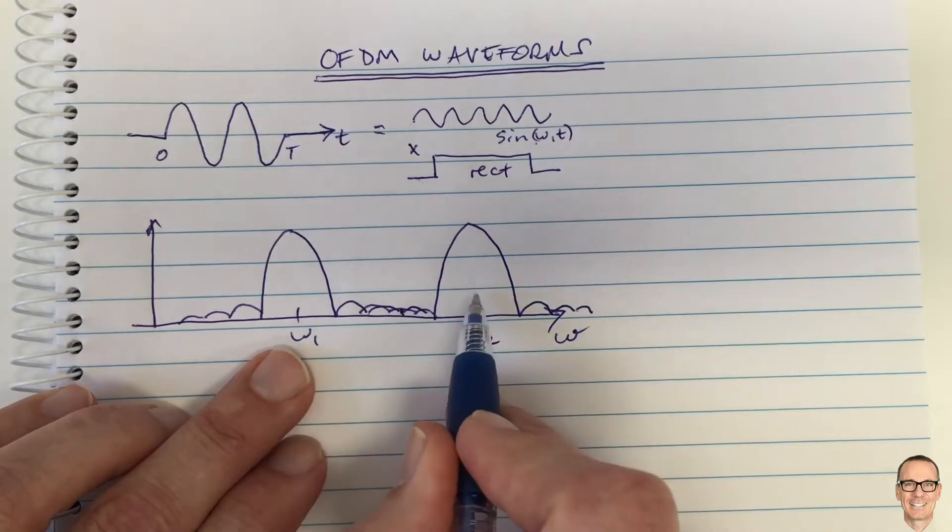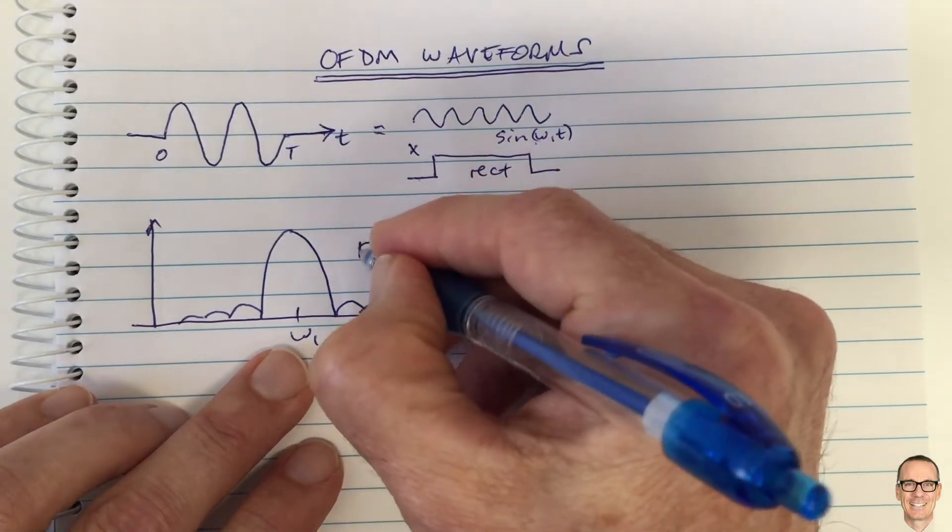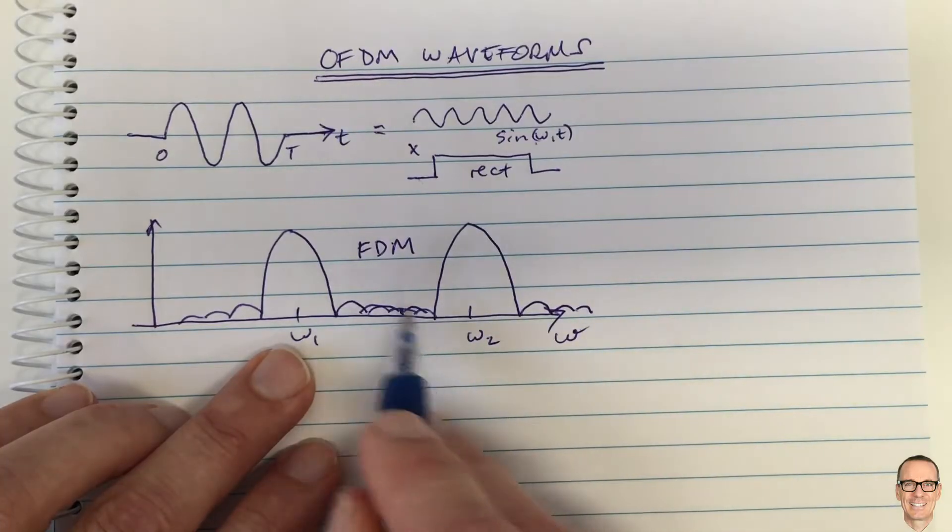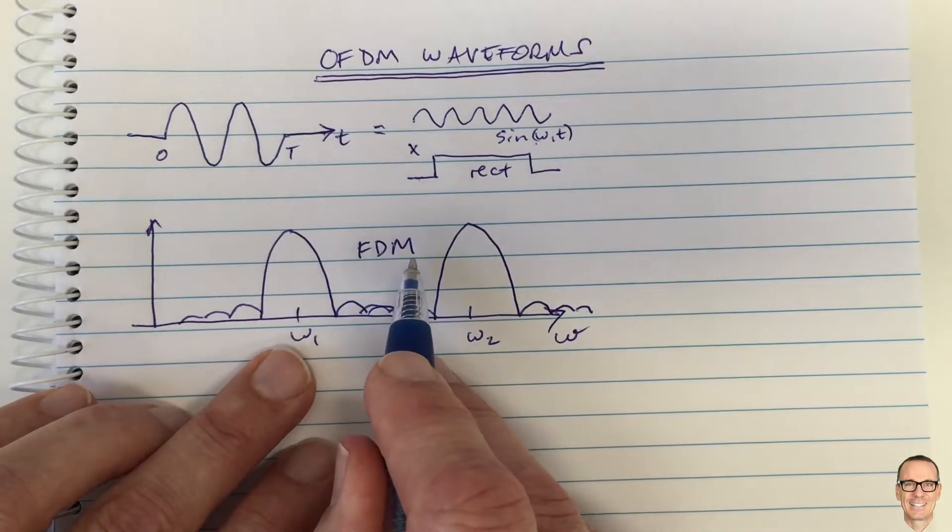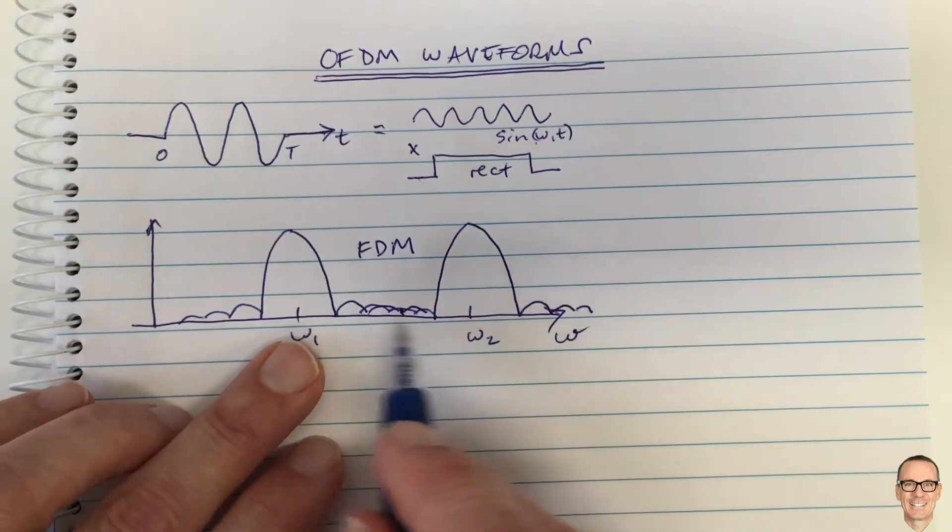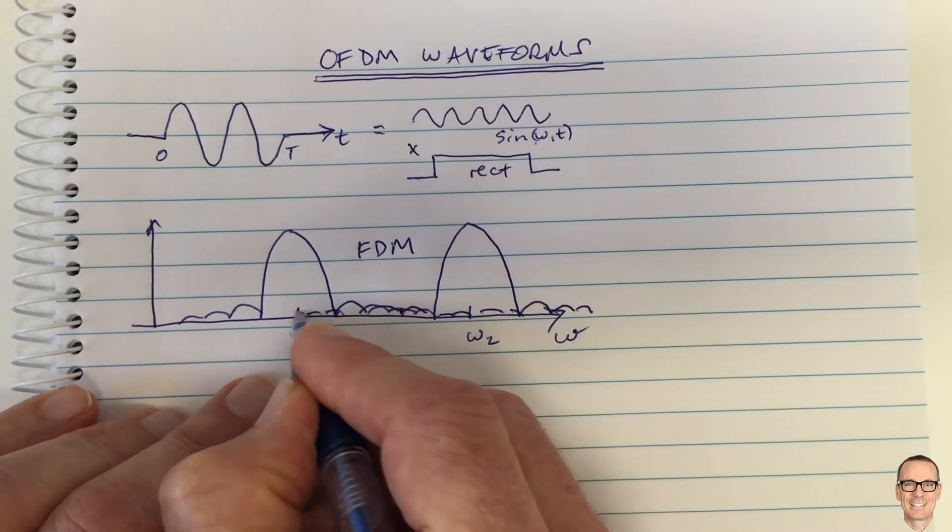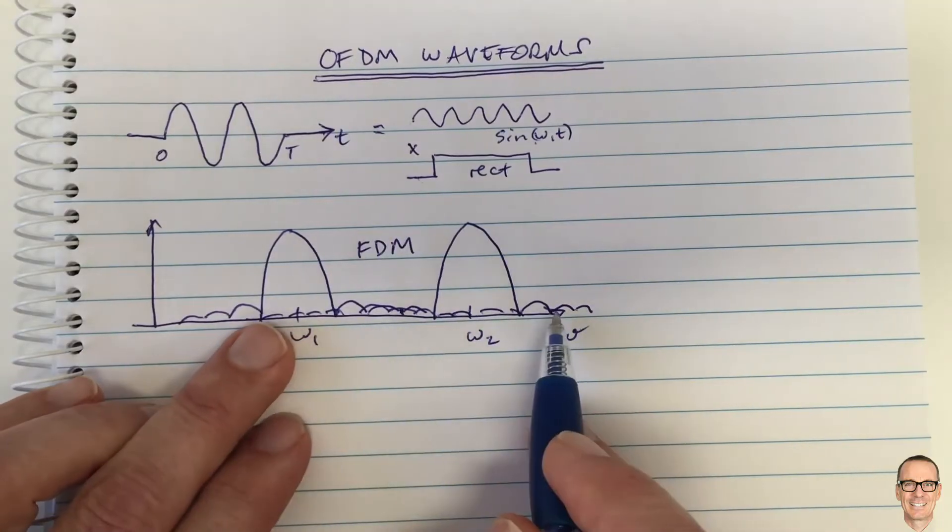And so we could send those two signals and this separated frequency division, this is by dividing up the frequency, this is called frequency division multiplexing, and we could send those two signals and they would interfere a little bit with each other because the side lobes would keep interfering and so on.